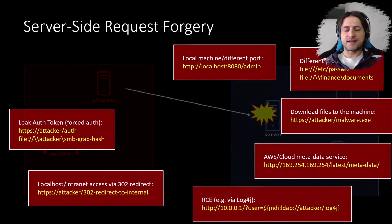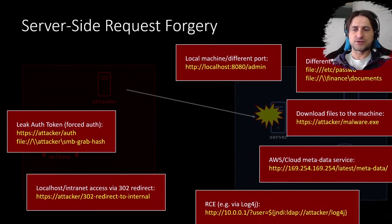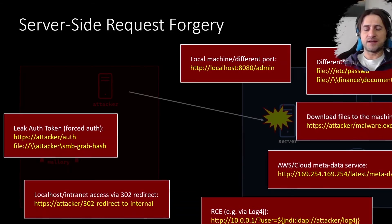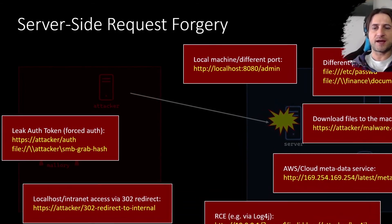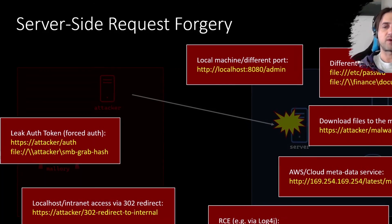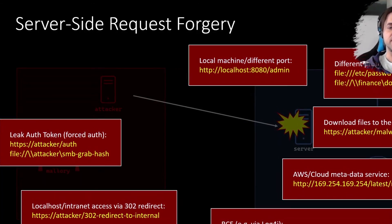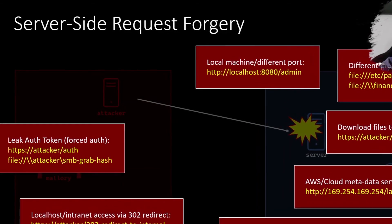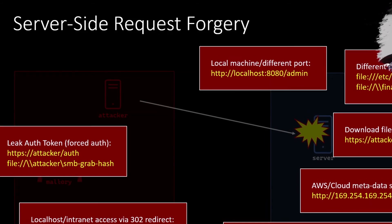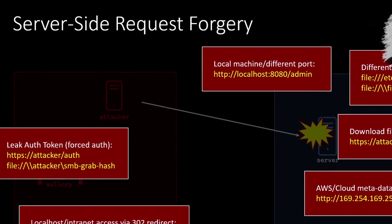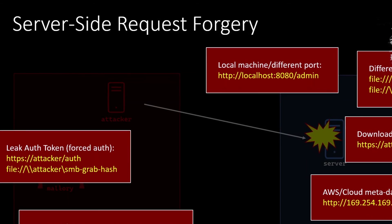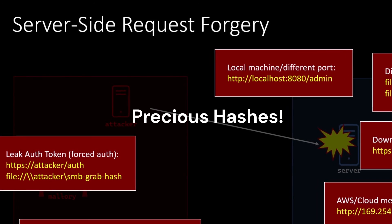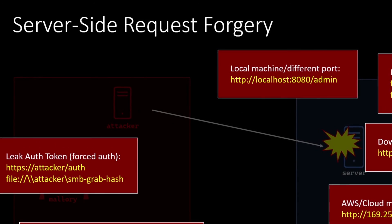The next scenario is leaking authentication tokens and credentials. In one scenario, the attacker points to their own server and the vulnerable server just gives credentials away by making the request — automatically appending a bearer token that is then sent to the attacker. The other scenario involves SMB: if you use the file system scheme and connect to an SMB server, the server might attach the Net-NTLM hash, which the attacker can capture and crack. This is a very powerful attack.